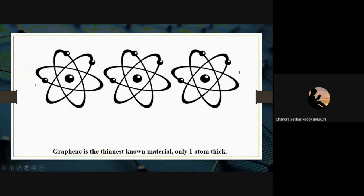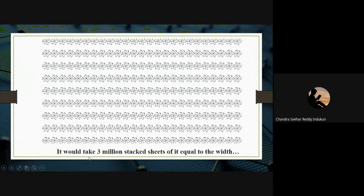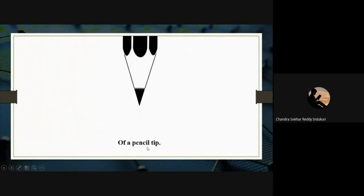Because of these properties, the two scientists considered graphene a ground-breaking material that can change our world. Graphene is the thinnest known material — only one atom thick. It would take three million layers of single-layer graphene to equal the width of a single pencil tip — which is unimaginable.